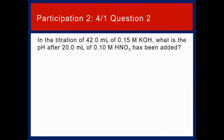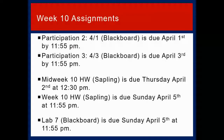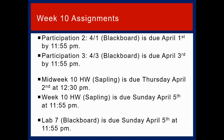For practice: in the titration of 42.0 milliliters of 0.15 molar KOH, what is the pH after 20.0 milliliters of 0.10 molar HNO3 has been added? Make sure you get your answers posted — that's going to wrap up this second video on titrations, with a couple more topics on titrations to come.